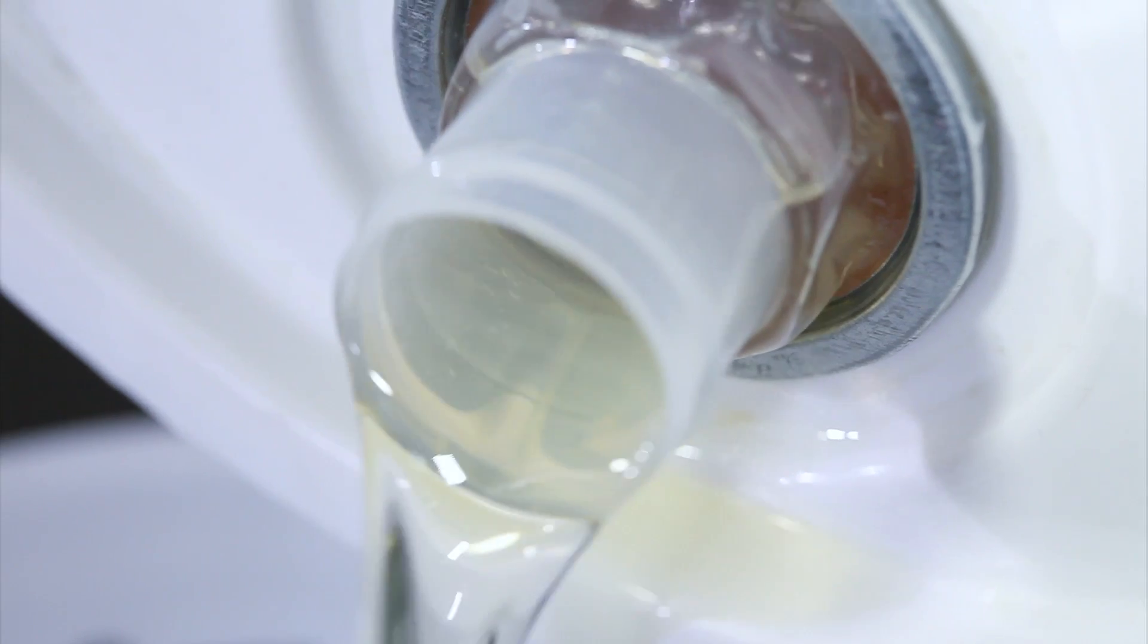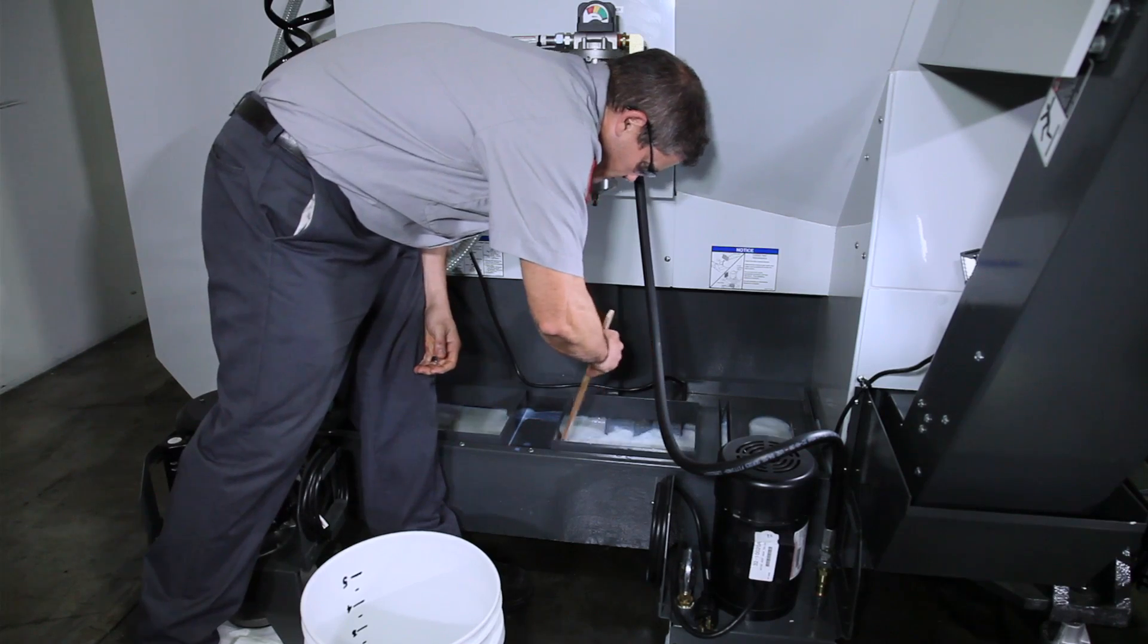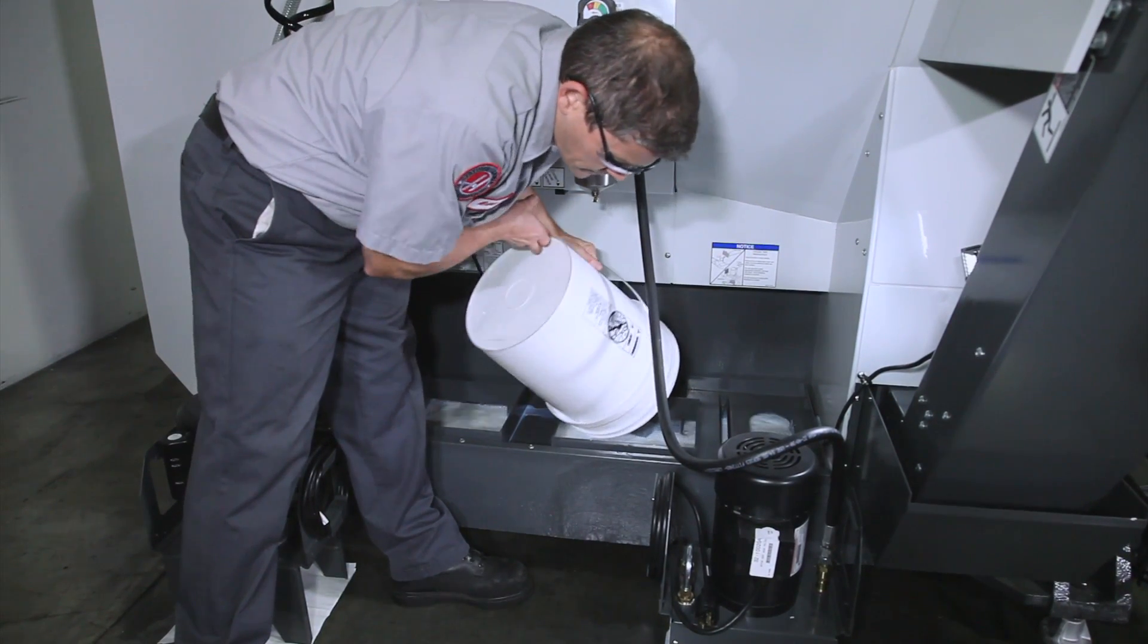Add each of the four mixed buckets to the tank, mixing them in as you pour. Now all the concentrate we need is in the tank and all that's left to do is top off the tank.